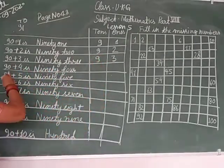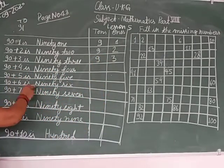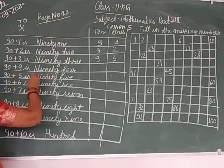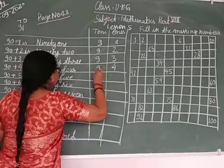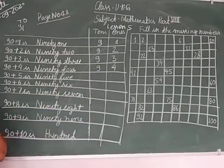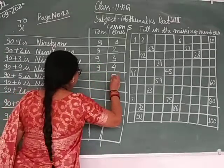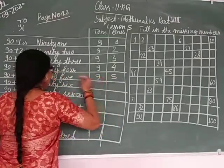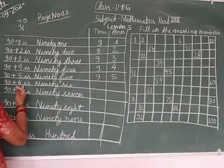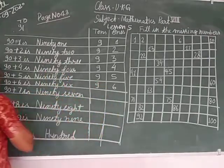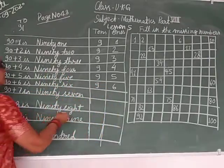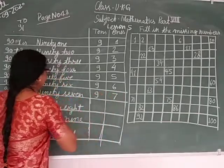Next, 94. 4 is the ones and 9 is the tens. Next is 95. 5 is ones and 9 is the tens. 96. 6 is ones and 9 is tens. 97. 7 is the ones and 9 is the tens.